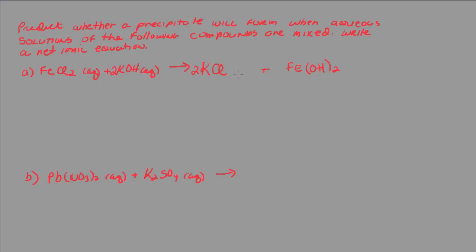We check our solubility rules. Potassium chloride is soluble, so it will exist in solution as potassium and chloride ions — we write it as aqueous. Iron(II) hydroxide is insoluble, meaning when we mix these two solutions together, the iron(II) ions and hydroxide ions are very attractive to each other and form a precipitate. So yes, a precipitate does form. We're now asked to write the net ionic equation.